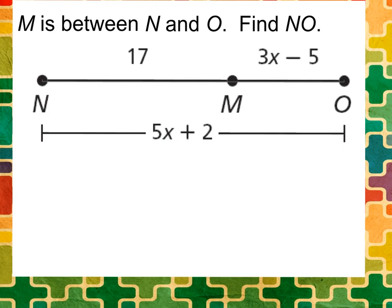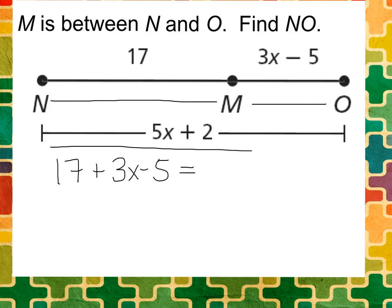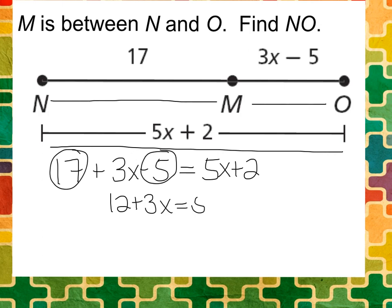We want to find out the total distance. We know that NM which is 17 plus MO which is 3X minus 5, if we add those two together, would give us the total distance which is 5X plus 2. Let's go ahead and solve for X. We can combine like terms on the left hand side and I get 12 plus 3X equals 5X plus 2.